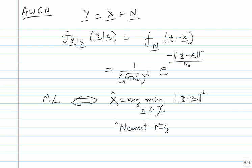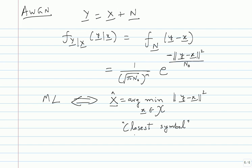The closest symbol decoder is very simple: look at the received point Y and find the nearest point x in the constellation in Euclidean distance. That is the rule, and it is optimal under the assumption that all signal points are equally likely, in AWGN. We can do examples and figure out how this works, and then compute probability of error and study trade-offs more closely.